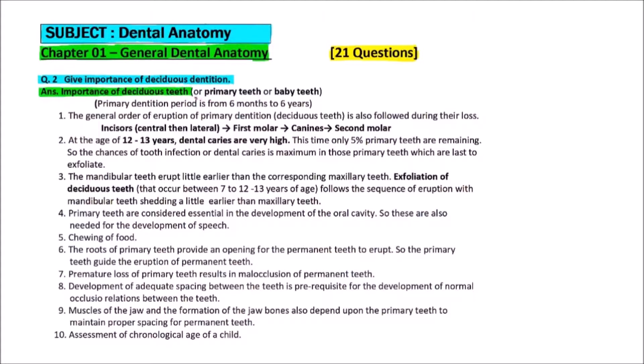Deciduous teeth are also known as primary teeth or baby teeth. The primary dentition period is from 6 months to 6 years.